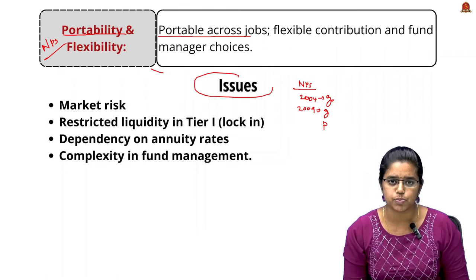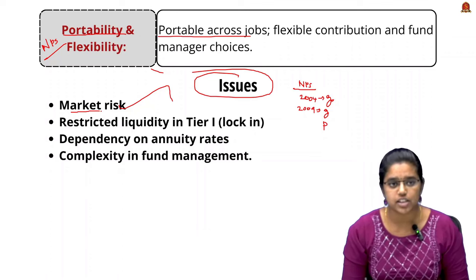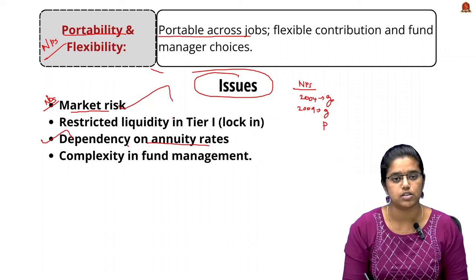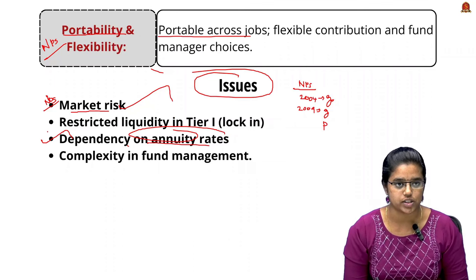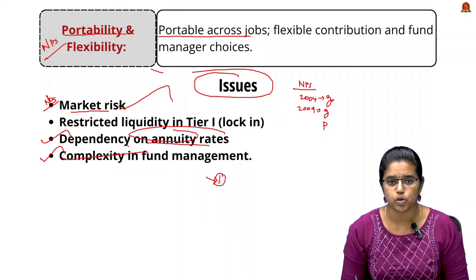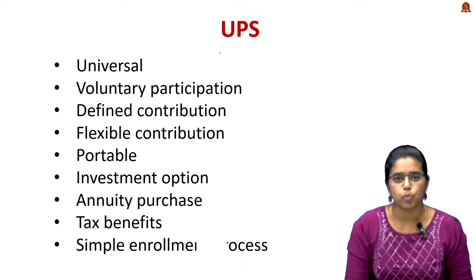Issues with the New Pension Scheme: First, market risk — market fluctuations can affect investment returns, which is a major concern. Second, dependence on the annuity rate elevates the risk of returns. There is no fixed pension amount guaranteed; it is subject to fluctuation. Third, complexity in fund management — deciding the proportion of funds to invest in equity, corporate bonds, and government bonds may be complex for some subscribers.